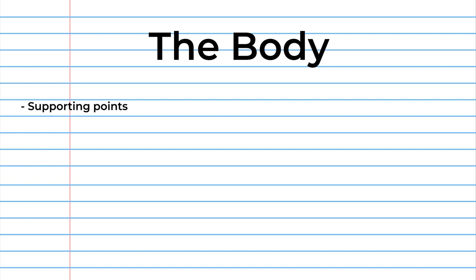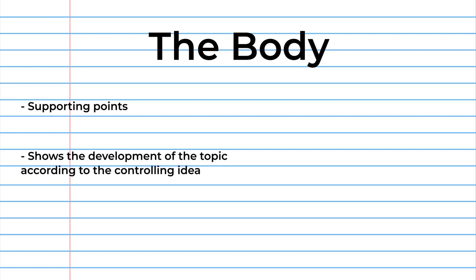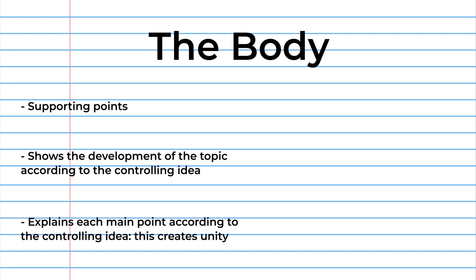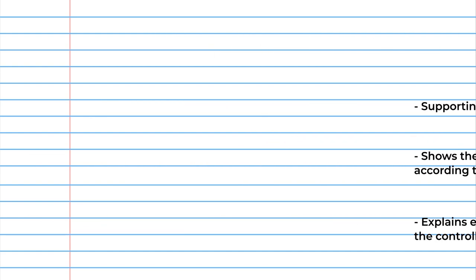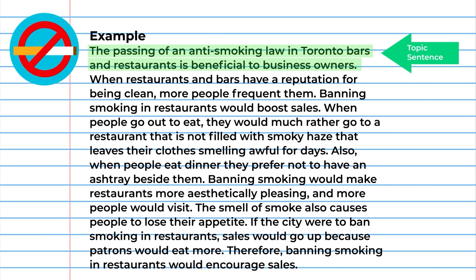The body of the paragraph provides supporting points, shows the development of the topic according to the controlling idea, and explains each main point according to the controlling idea. There are three supporting points in the body.